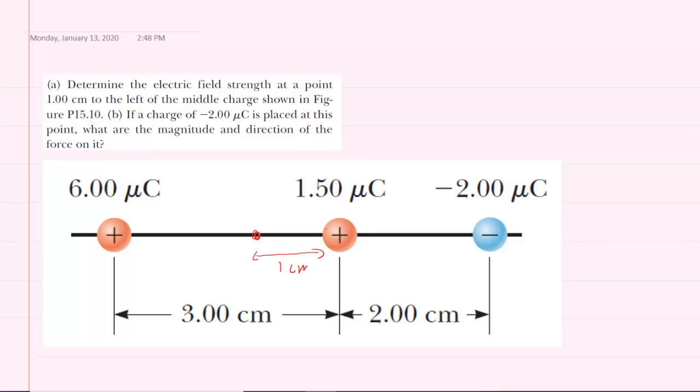We also want to figure out the distance from each of the other charges to that same point. So the distance from this positive charge to the point would be two centimeters, and we know that because the total distance between positive charges is three. And then the distance from that point to the negative charge will be three centimeters, because between the negative and the middle is two centimeters plus one more centimeter.